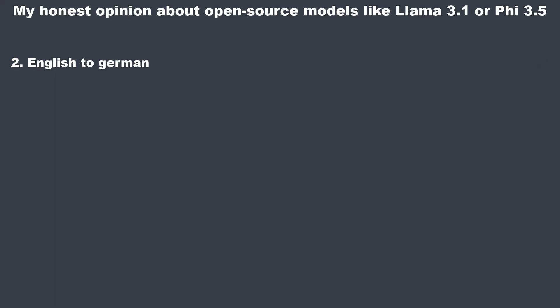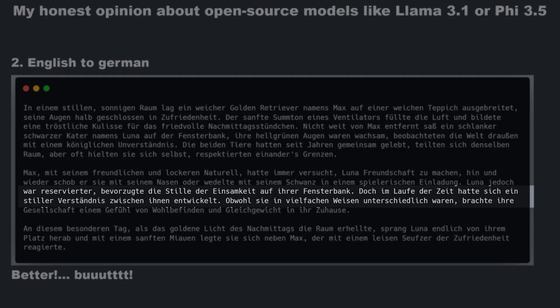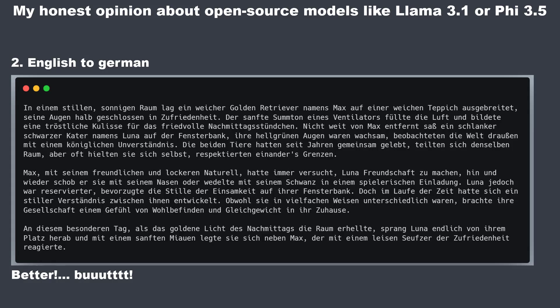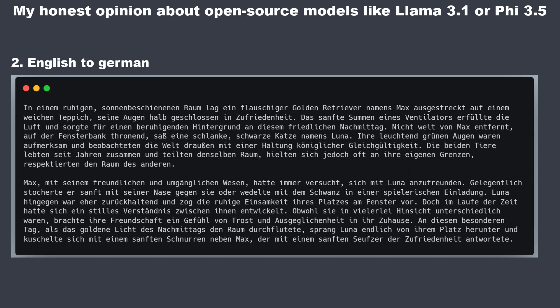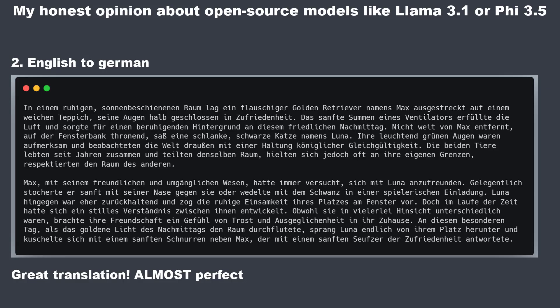LLAMA 3.1's translation is much better but still has some grammatical mistakes and doesn't sound fully polished — for example, 'ein stiller Verständnis' is missing an 'S,' and 'obwohl sie in vielfachem Weisen' has an extra 'N.' But in general you understand it and get the meaning. GPT-4O mini's translation is by far the best — there are no clear mistakes. I would change one or two words, like 'stocherte' to 'stupste,' but in general it's a very good translation you could easily use as-is.